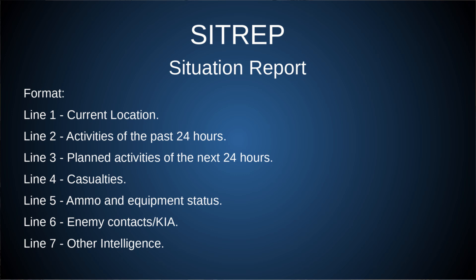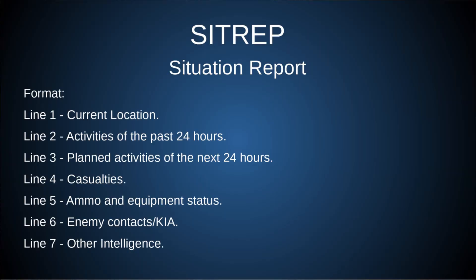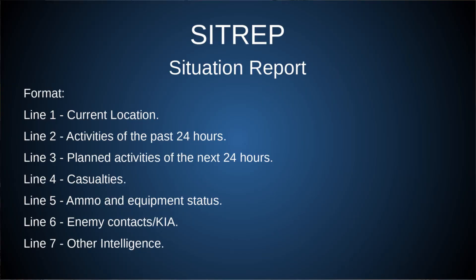Line 3 is planned activities for the next 24 hours — again, only mission-relevant, concise, simple language. Line 4 is casualties, hopefully zero, but very relevant for your base camp to know about. Line 5 is ammo and equipment status — this could be an abbreviated LACE report, which we'll talk about later. How are you doing on ammo? Is anything faulty or breaking down?